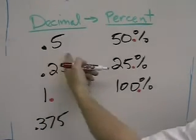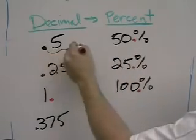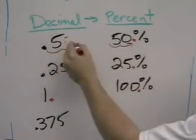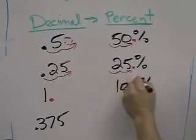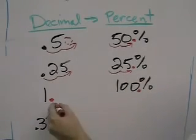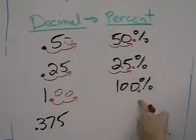What happened to the decimal going from 0.5 to 50? It moved over two places. What happened in 0.25? It moved over two places. What happened in the 1? It moved over two places, needing two extra zeros.